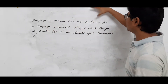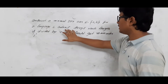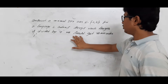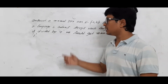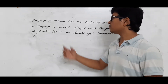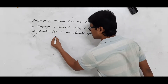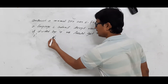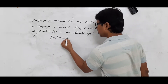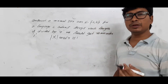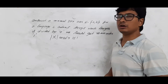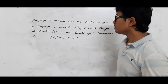Now let me read out the question: construct a minimal DFA over alphabets {a, b} for the language L containing strings whose length is divisible by four with remainder one — meaning if you divide the length by four, you should get remainder one. In the previous example we solved the question whose length is exactly divisible by four (remainder zero); now I want to solve for remainder one.